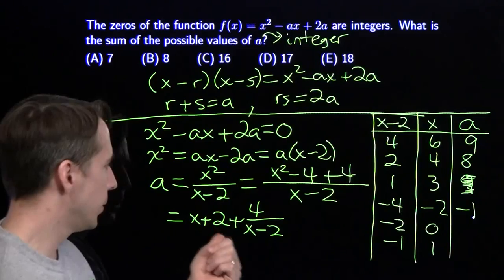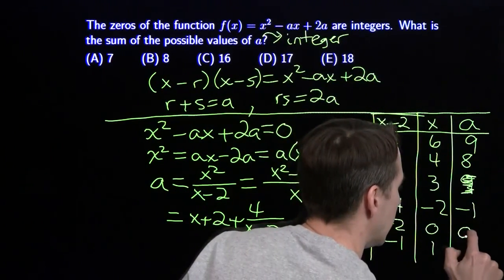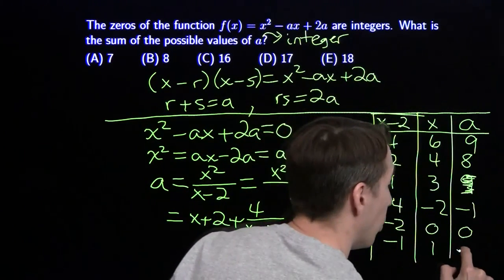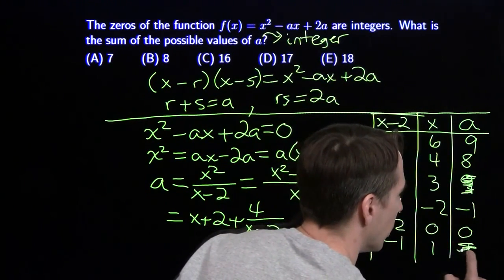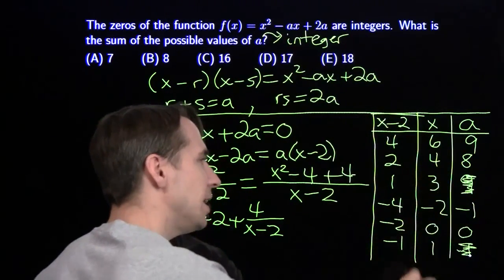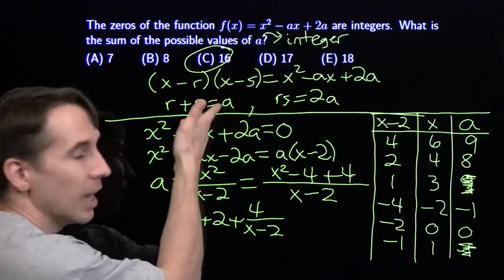x = 1 gives 3 - 4 = -1. I've already got -1, so don't include it again. Here are my possible values of a: 9 + 8 + 0 - 1 gives us 16, and we're done.